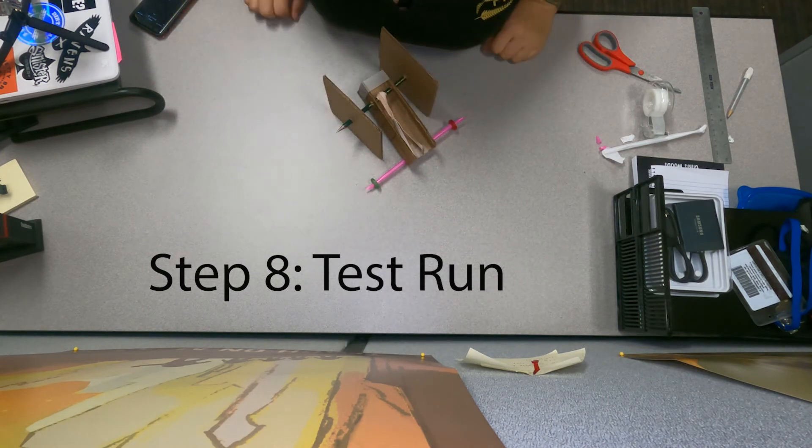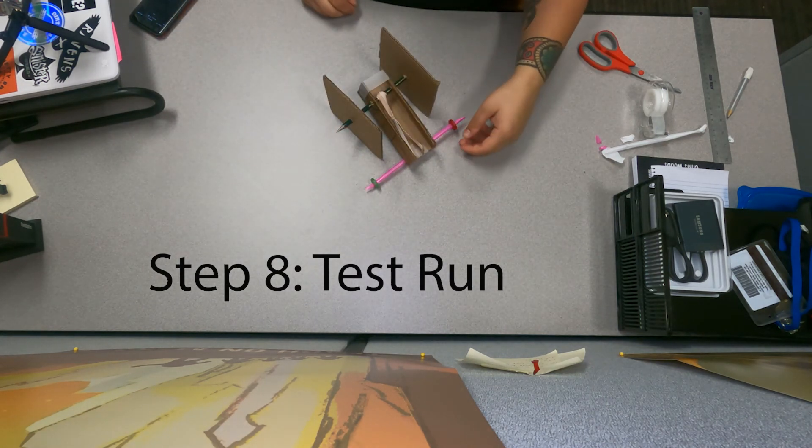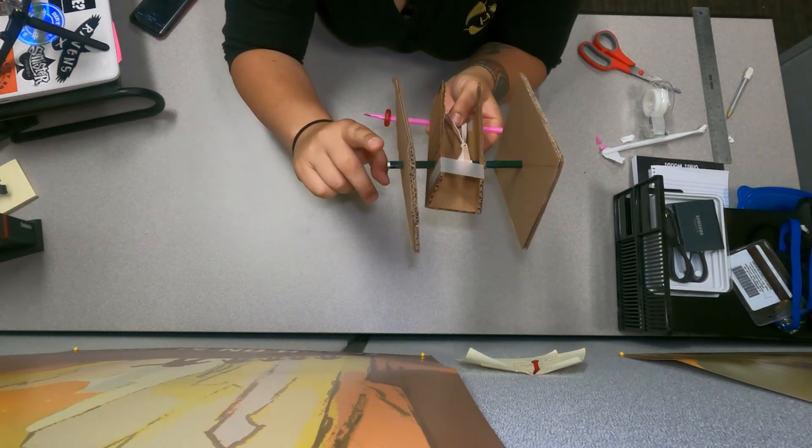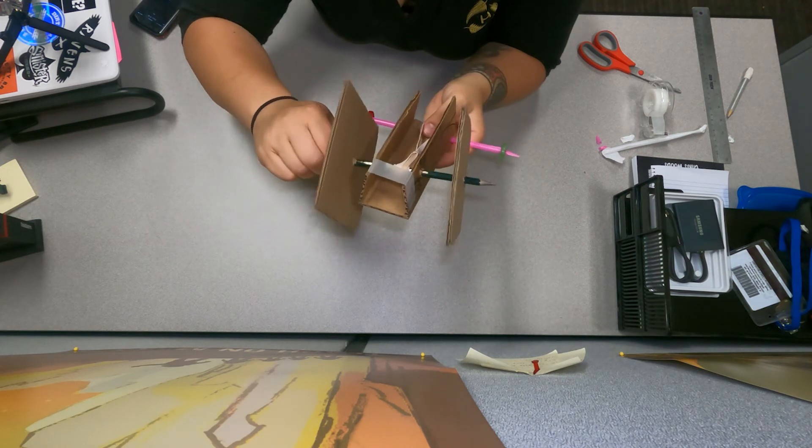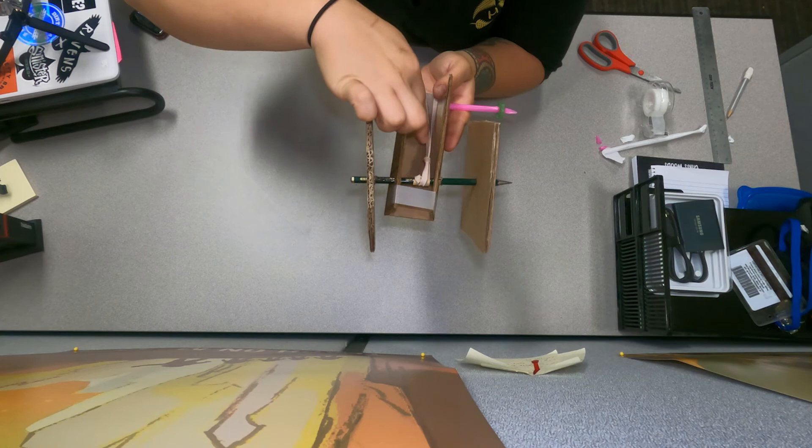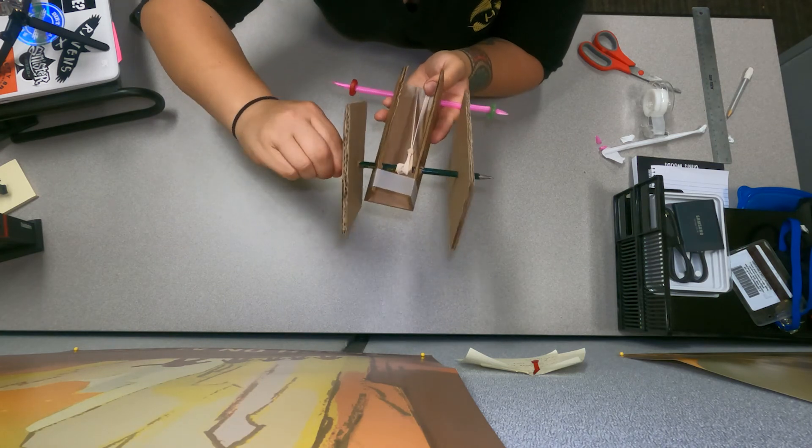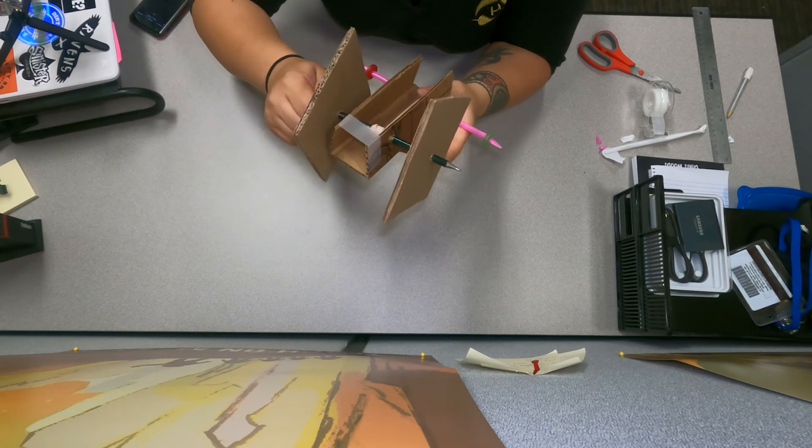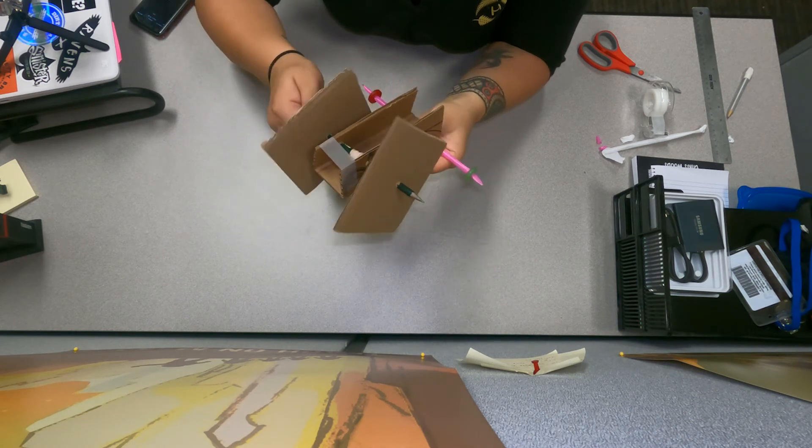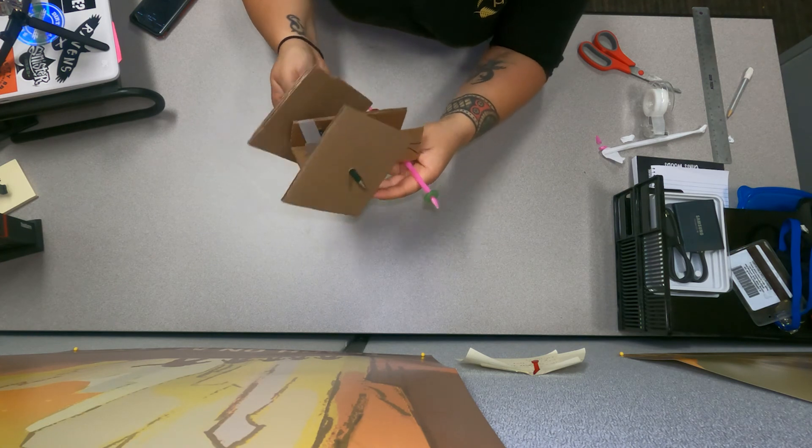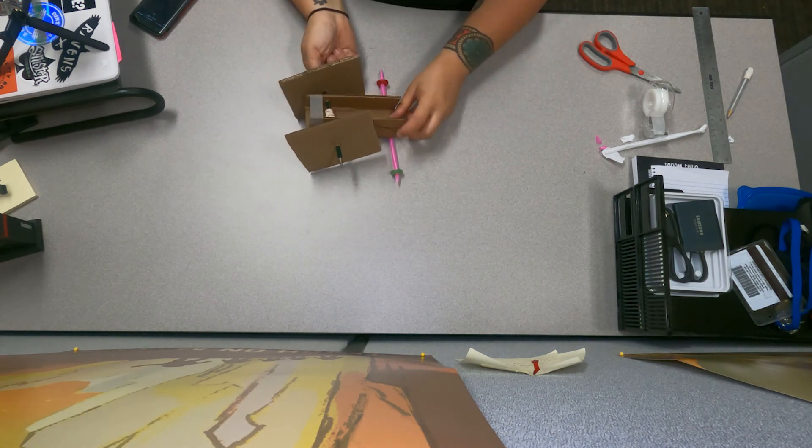Step eight, which is really again step seven, we're going to do a test run. We're going to grab the little notch on the side of the pencil axle and you're going to twist it backwards creating tension with your rubber band. Your rubber band is going to get really tight. When you feel like you have enough tension, you can put it back down on your surface and give it a go and see if it moves.